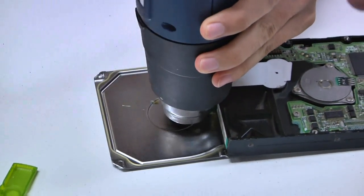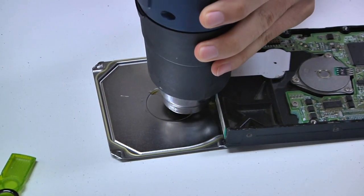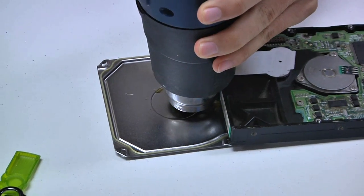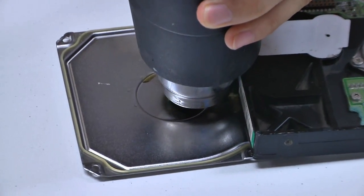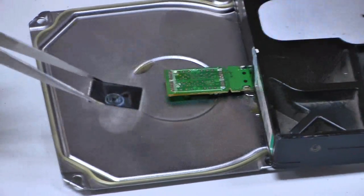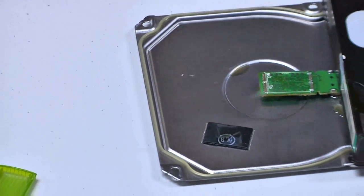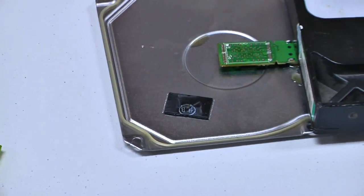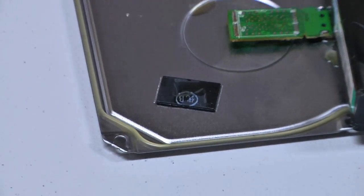And when you are holding the hot gun and doing the heating, at the same time you can use your other hand and use the tweezer to take off, to remove the chip. Now you see it's removed. So this is the process of desoldering.